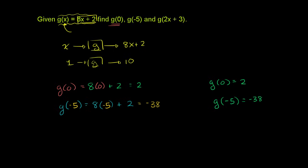Now this last one is a little bit interesting. Now let's do g of 2x plus 3. So now they're not inputting a number — they're inputting an expression. And what we have to do is everywhere where we see x, we're going to replace it with that expression. Let me write this down — if I did g of an orange circle...